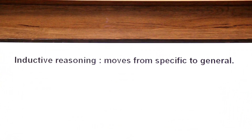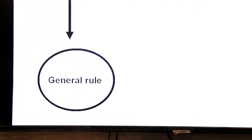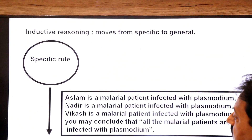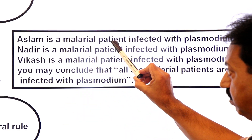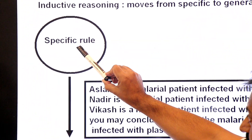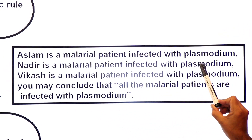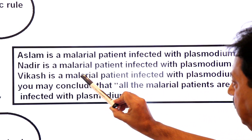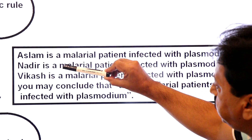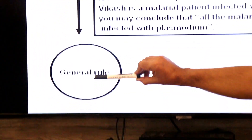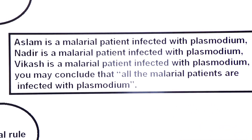Let's define inductive reasoning with an example. Inductive reasoning moves from specific to general. Aslem is a malarial patient infected with plasmodium. Nader is a malarial patient infected with plasmodium. Vikash is a malarial patient infected with plasmodium. Each of these is a specific case. When we apply this specific information to form a general rule using inductive reasoning, we conclude: all malarial patients are infected with plasmodium. This is an example of inductive reasoning.